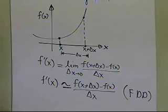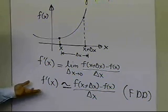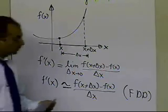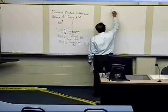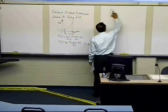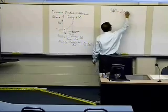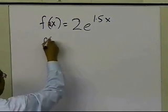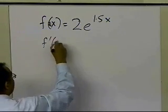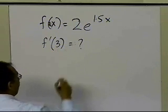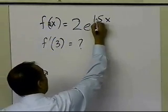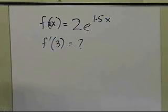Let's go ahead and see through an example how good we get at calculating the approximate value of the derivative. I've chosen a simple function: f of x equal to 2e to the power 1.5x. Somebody is telling me to go ahead and calculate f prime at 3 — find out the derivative of this function at x equal to 3. So I'll have to look at the formula I just showed, so let me write it down again.